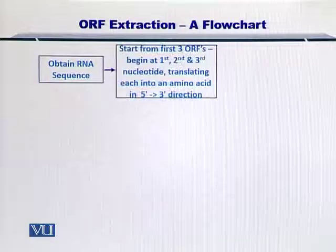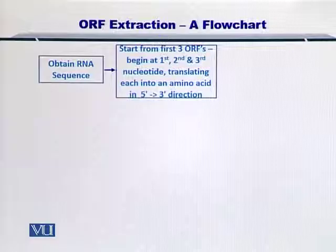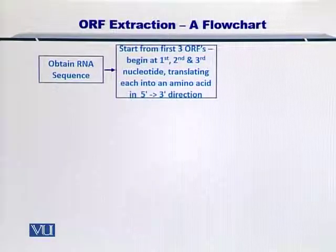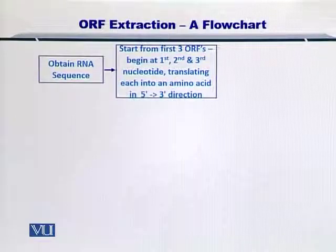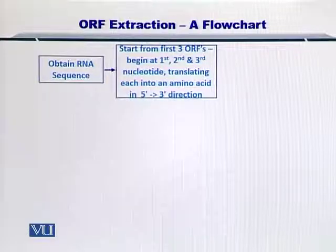After that, you start from the list of three ORFs beginning at the first, second, and third nucleotide. As you know, for the 5' to 3' end there are three possibilities for the ORF, and similarly on the complementary strand, that is the 3' to 5',